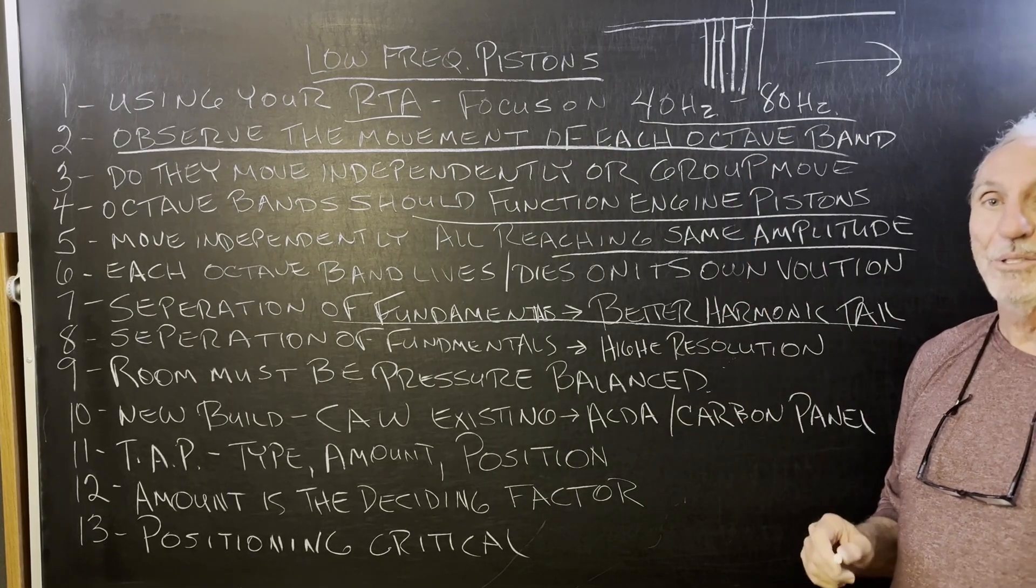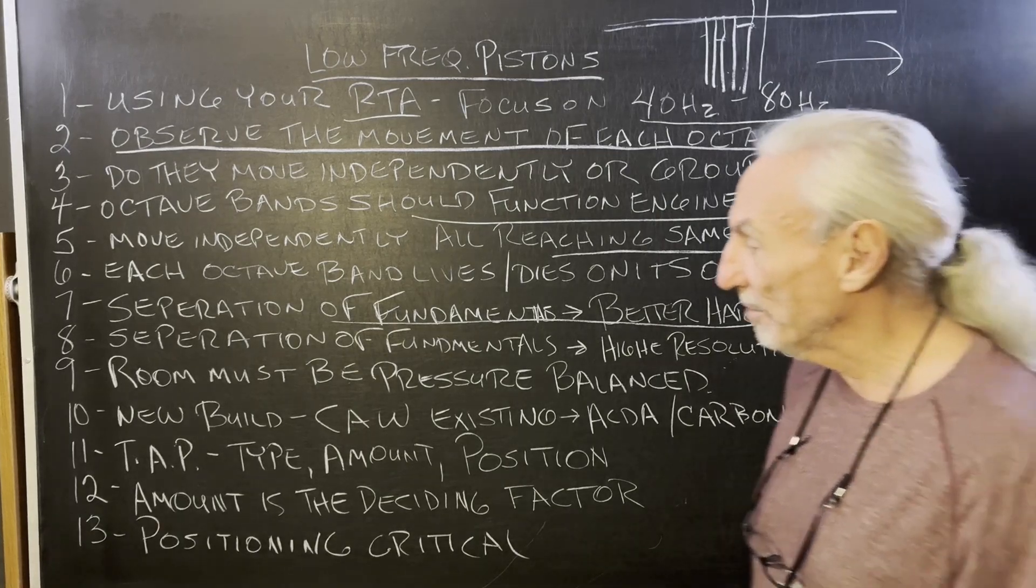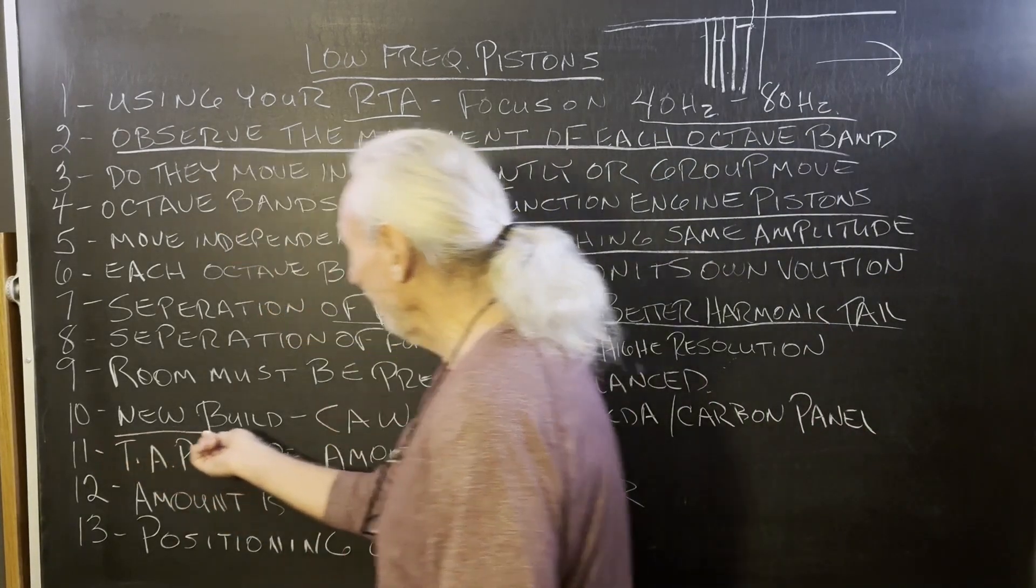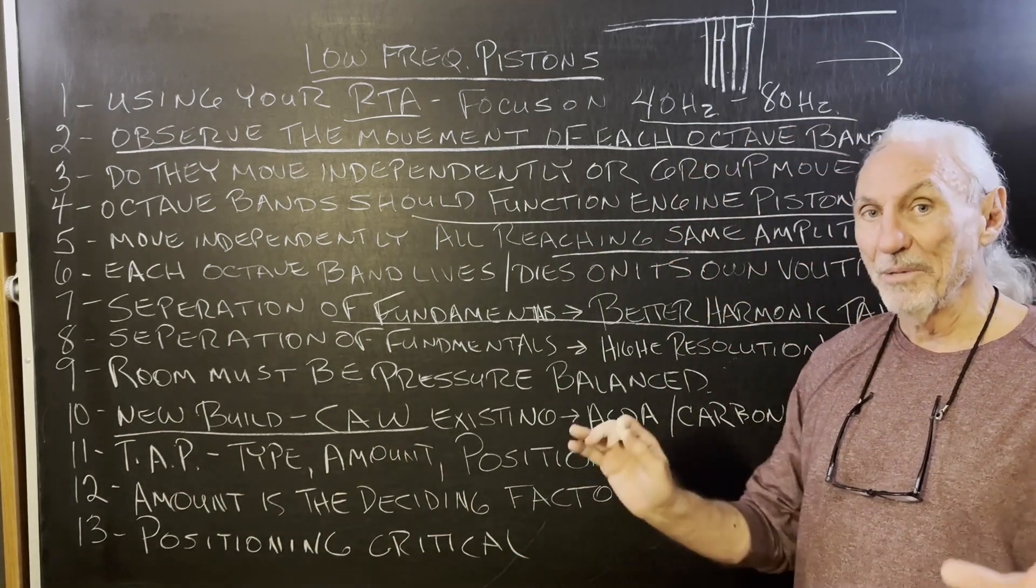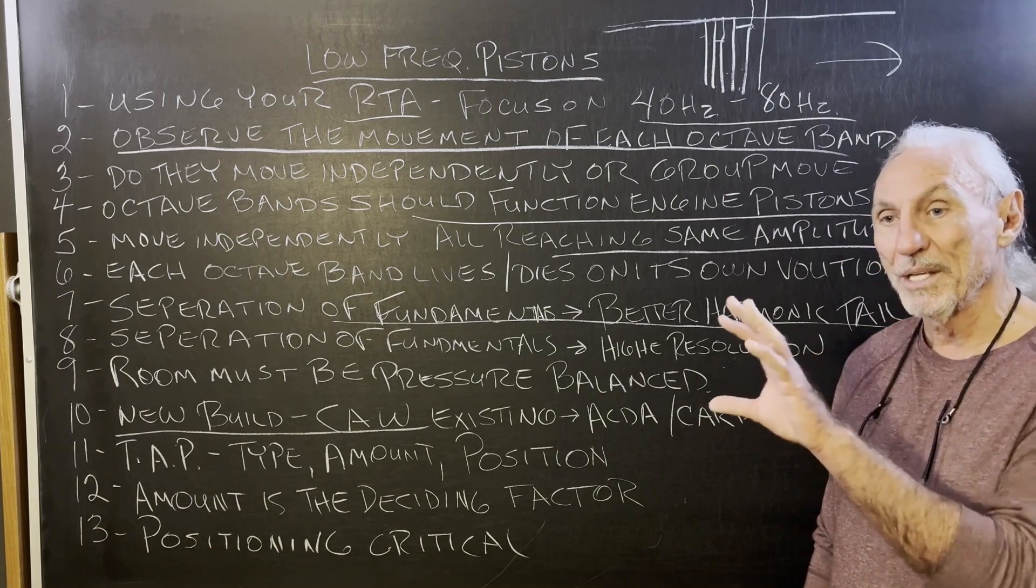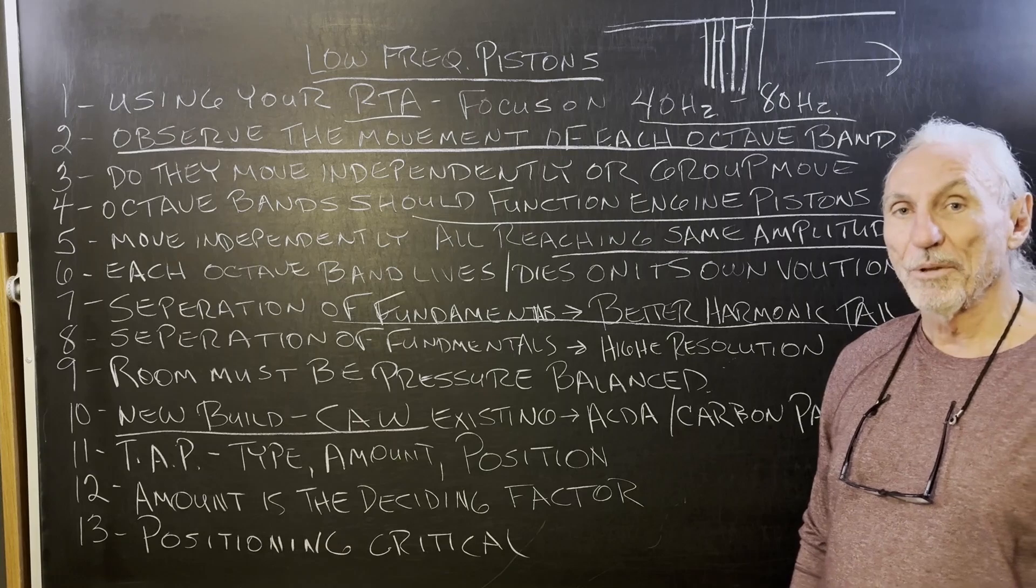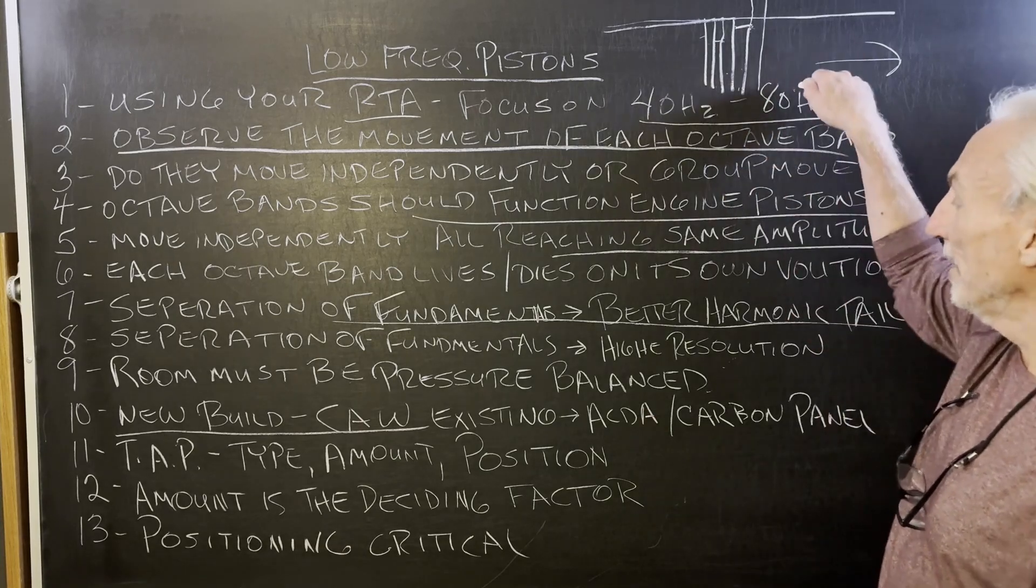To get this, you've got to pressure balance the room, and you do that in a couple different ways. If you're doing a new build, use our CAW—that's the in-wall system where we build diaphragmatic absorbers between the studs. Each absorber is tuned to the frequency and amplitude of the low frequency issues.